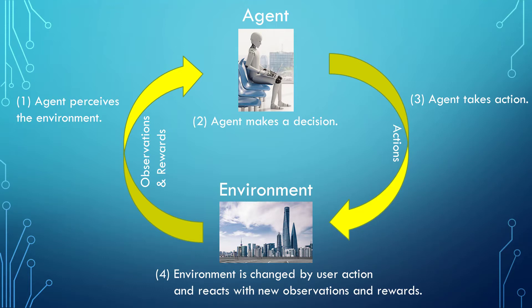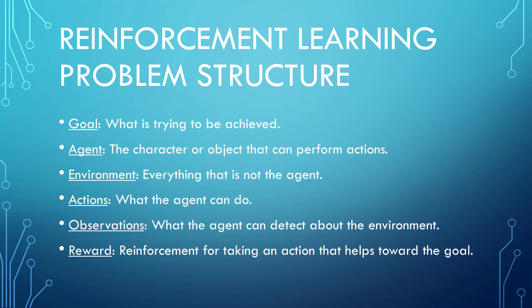In deep reinforcement learning, which is what Unity ML Agents is based on, the decision is made using a deep neural network. Also, in the last video, we looked at this structure for any reinforcement learning problem, where we have an agent that has a goal and rewards that reinforce progress toward that goal. The agent is in an environment which it observes and acts upon. A well-formed reinforcement learning problem has clear definitions for each of these bullets.